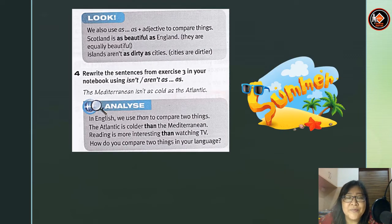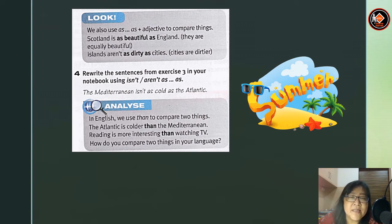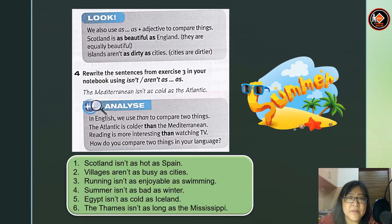Remember, we also use 'as... as' plus adjective to compare things. Example: Scotland is as beautiful as England — they are equally beautiful. Islands aren't as dirty as cities — so cities are dirtier. Now for exercise 4, rewrite the sentences using 'isn't/aren't as... as.' Example: the Mediterranean isn't as cold as the Atlantic. Answers: Scotland isn't as hot as Spain. Villages aren't as busy as cities. Running isn't as enjoyable as swimming. Summer isn't as bad as winter. Egypt isn't as cold as Iceland. The Thames isn't as long as the Mississippi.